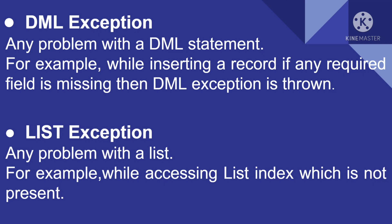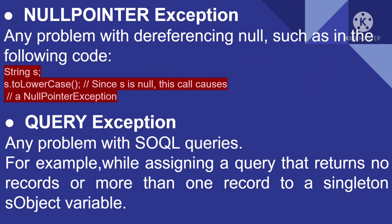The second type is List Exception. Any problem with a list will cause a List Exception. For example, while accessing a list index which is not present in that particular list, there will be a List Exception. We use lists to store retrieved data, and if no records are present in the database and we try to assign those retrieved records, this List Exception will occur.